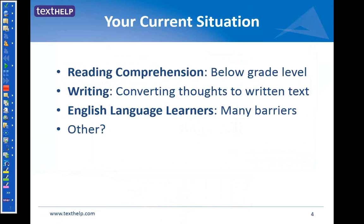Your current situation — you probably have lots of students who are not reading at grade level. It's very common, what we call that grade 4 cliff. Our students are making the transition from learning to read to reading to learn. So the first time that you assign a chapter and ask them to respond to it, it's a real crisis point for a lot of students in their learning. We have many, many students who have issues converting their thoughts to written text, whether it is based on a disability, whether they are English language learners still struggling to express themselves in English. There are lots and lots of students who struggle.